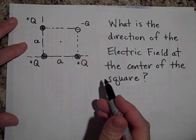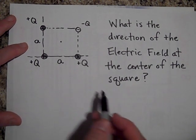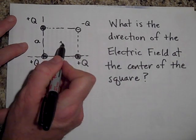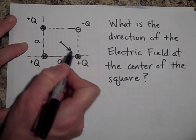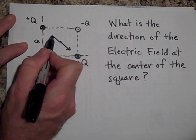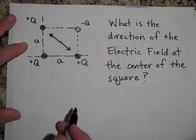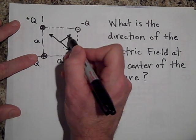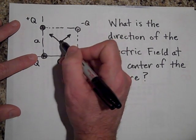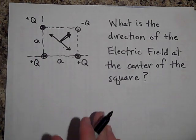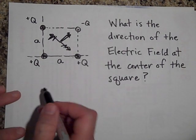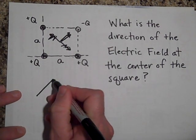Okay, so here's a quick way to look at this. The field from this one and from this one cancel out. This one's pushing that way. This one would push a positive test charge that way. They cancel out. This field from this one is pushing this way. And this field from this one is pushing that way also. So the direction of the field, these cancel. The direction of the field is going to be a big vector going that way.